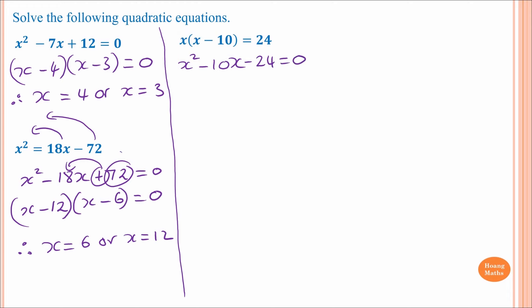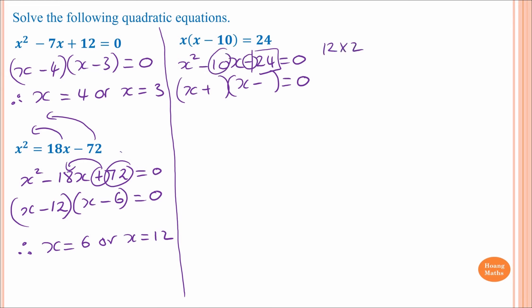Now we factor. The sign is negative so we put one plus and one minus: (x + _)(x - _) equals zero. Two numbers multiplied together must give 24 and their difference must be 10. 12 times 2 is 24 and the difference is 10. Because of the negative 10, the negative number must be the larger one, so 12 goes on the negative side and 2 on the positive side. Therefore x equals negative 2 or x equals 12.